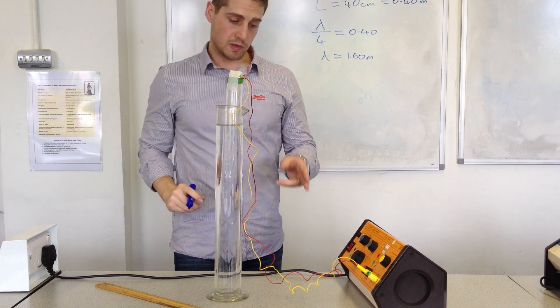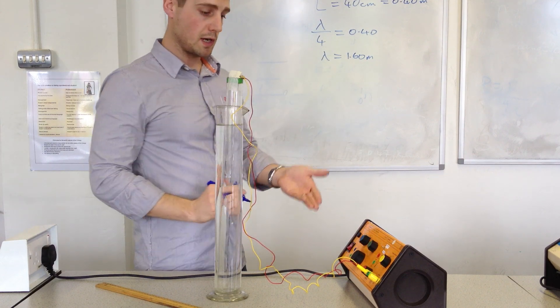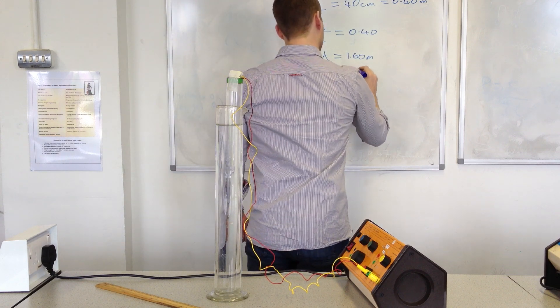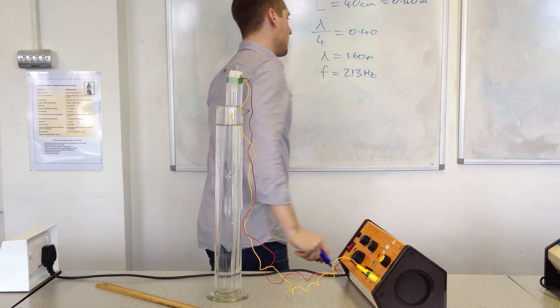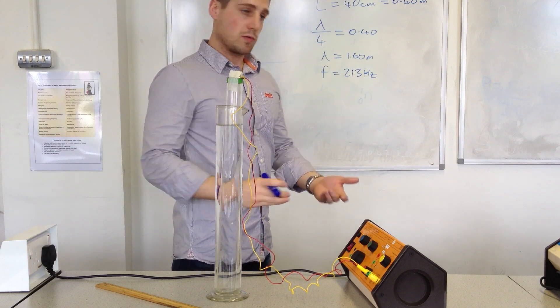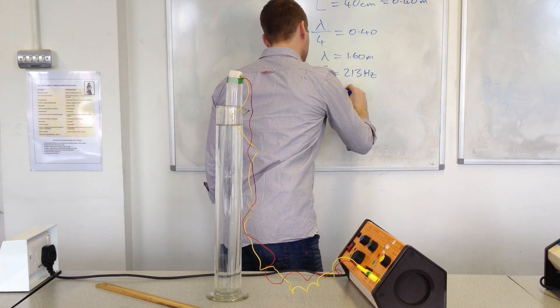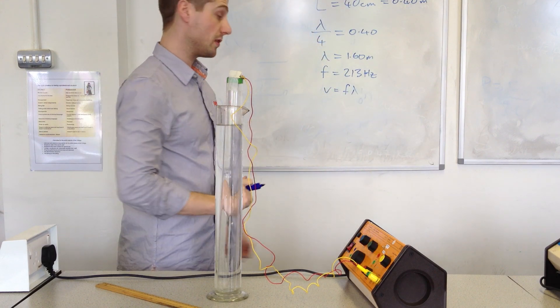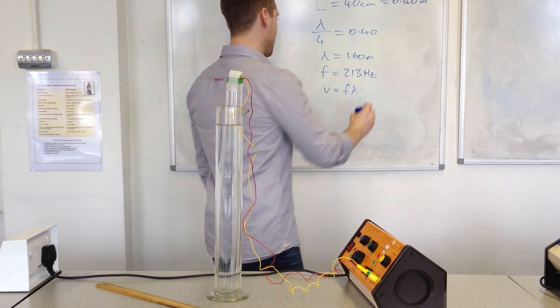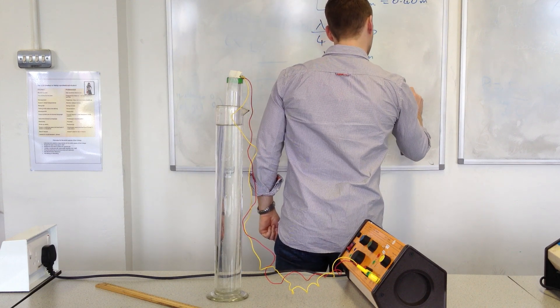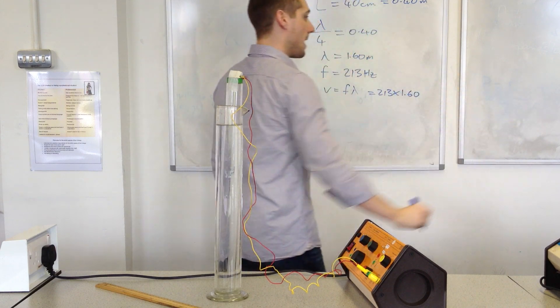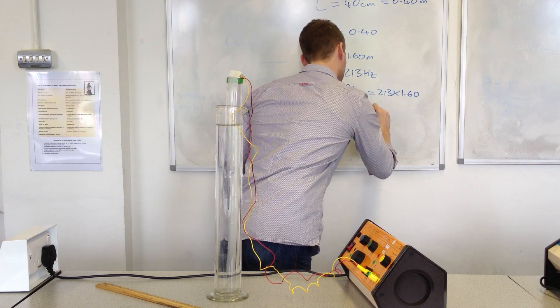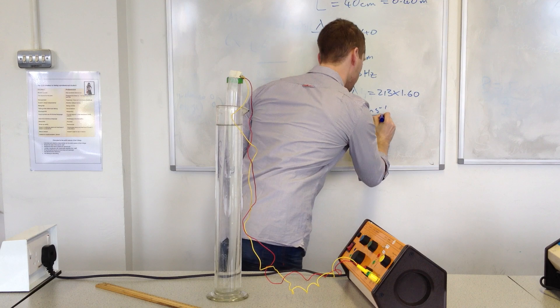The frequency at which that was occurring was 213 hertz, which is what the signal generator is set to. Using the formula of V equals F lambda, sometimes quoted as C equals F lambda, I can now put my values in. 213 hertz by 1.6, and that should give me 340 meters per second. So that's the speed of sound in air using this experiment to determine.